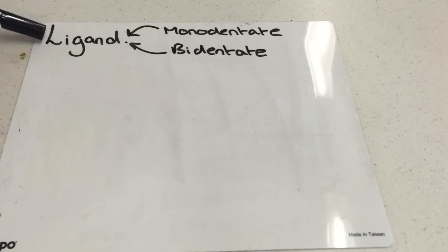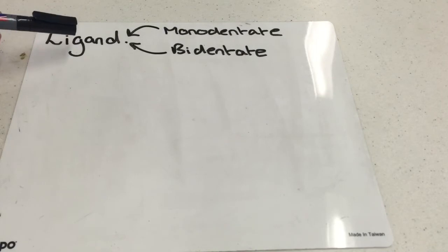So a ligand is a molecule or ion which donates a lone pair of electrons to form a coordinate bond or dative covalent bond to a transition metal ion. Now, the most common transition metal ions you're going to see at A-level are copper 2 plus ions, cobalt 2 plus ions and either iron 2 plus or iron 3 plus.